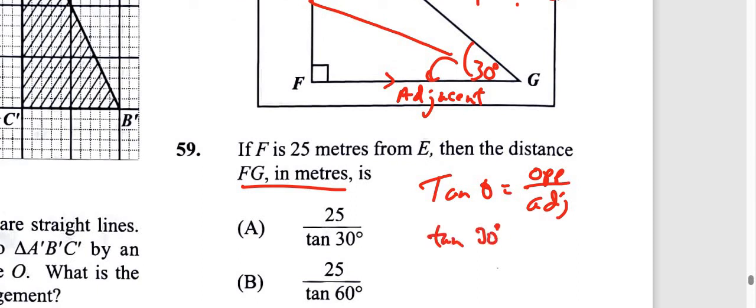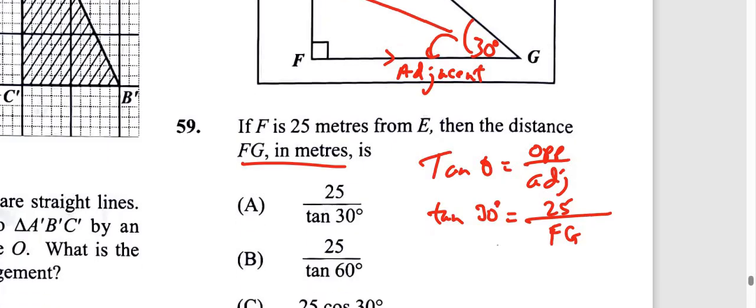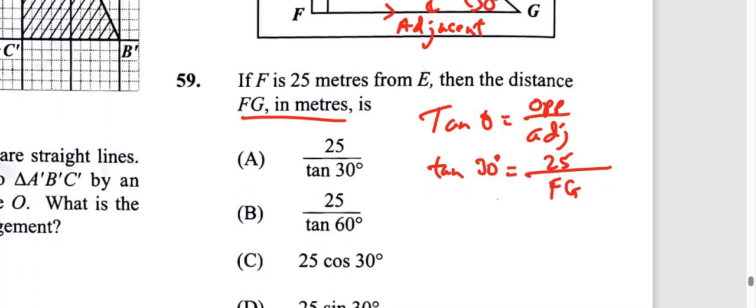Tan of 30 degrees, that's the acute angle. Opposite is 25 meters, we're given. Adjacent we don't know, we're going to put FG for that. If you want to find the quantity in the denominator, we're going to swap it with tan 30.